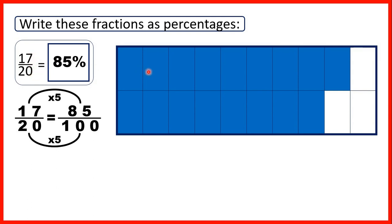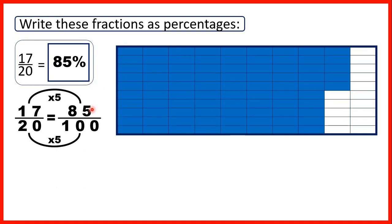Finally we had 17 twentieths, so 17 parts out of 20. We found that was equivalent to 85 hundredths, so as a percentage, 17 twentieths is 85 percent.